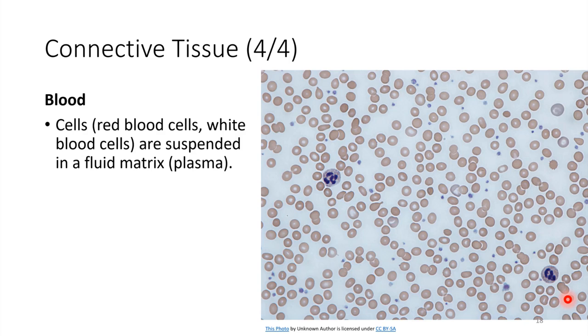Finally, our last example of connective tissue is blood. You might not have thought of blood as a tissue before, but it is. It fits this basic definition. We have living cells that exist in some type of a matrix. In this case, the matrix is fluid. It's plasma. Blood is a type of connective tissue.